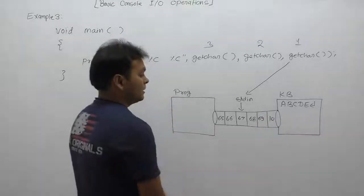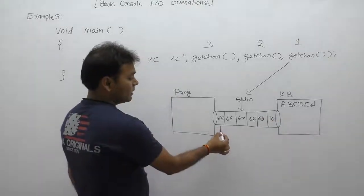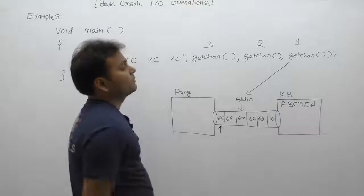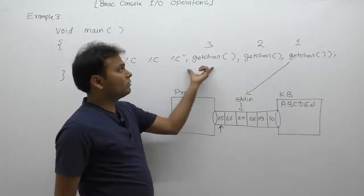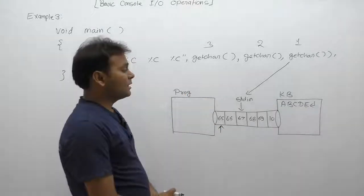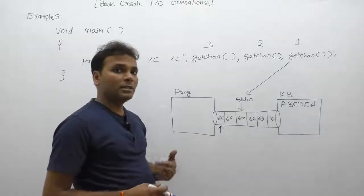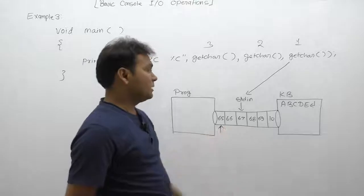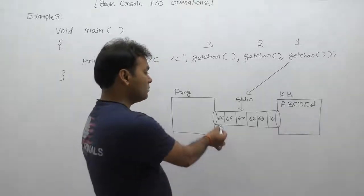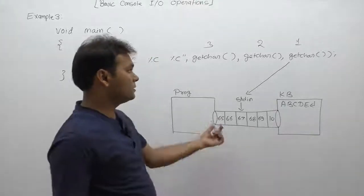Initially buffer pointer will be pointing on the first byte. Due to the first or last getchar() function, what is the working? Same property as we are discussing in previous videos. First, it will read single character from current position of the buffer pointer. Current position is 65, so it will actually read 65, then return the reading character 65.